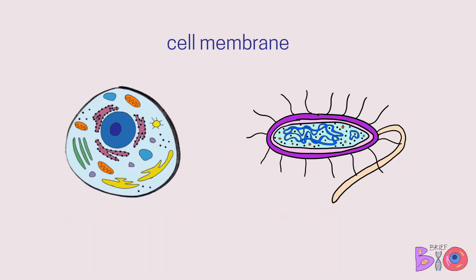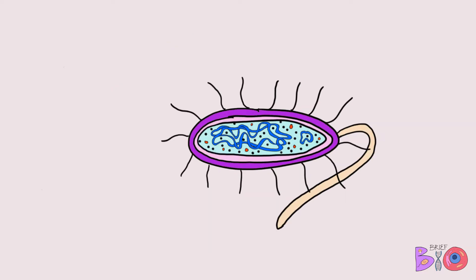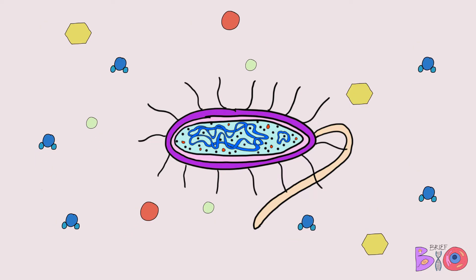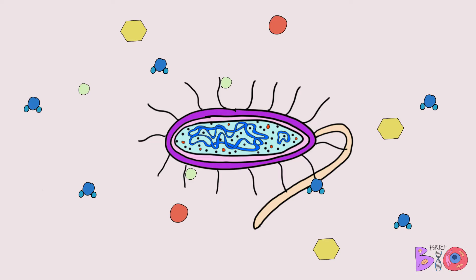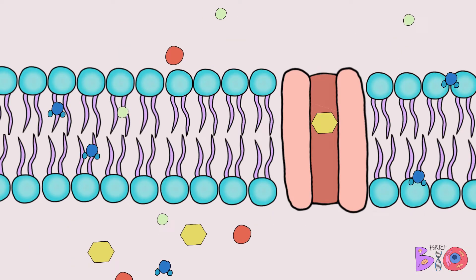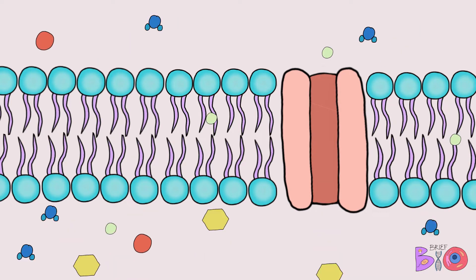The cell membrane is responsible for letting things in and out of the cell. In doing so, it helps maintain homeostasis by moving things like oxygen and glucose in, and carbon dioxide and other wastes out.